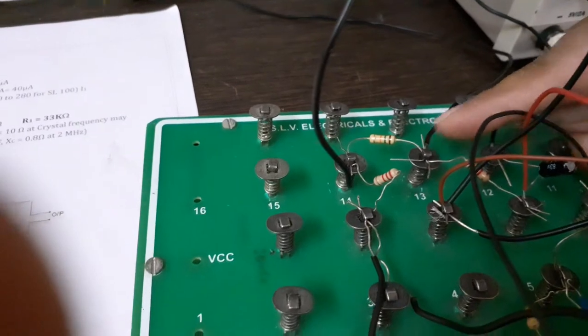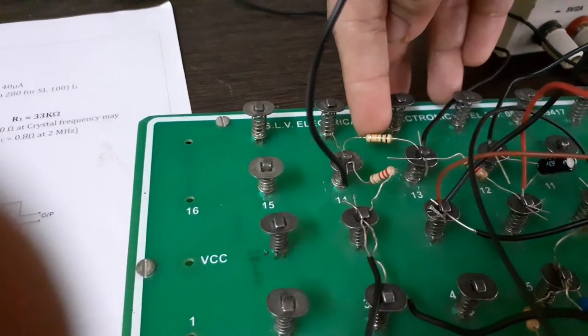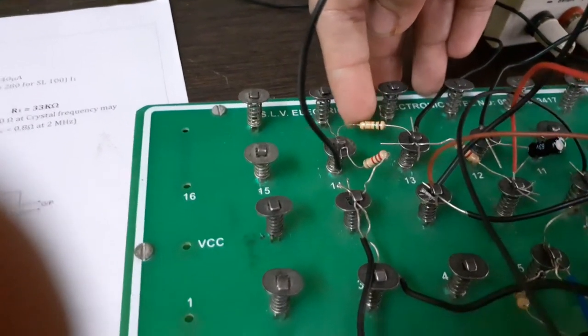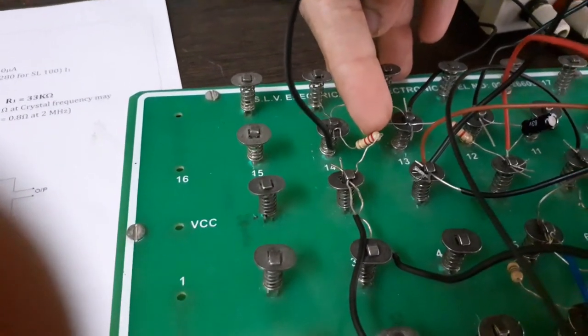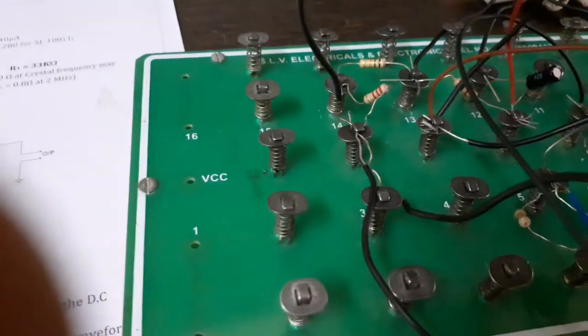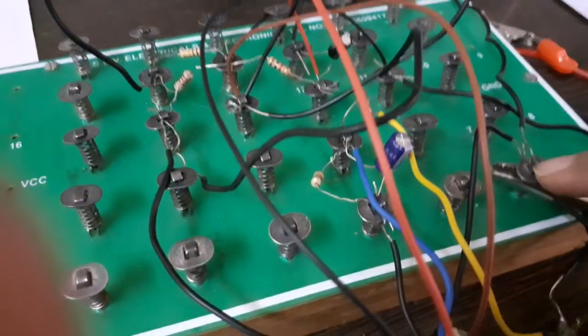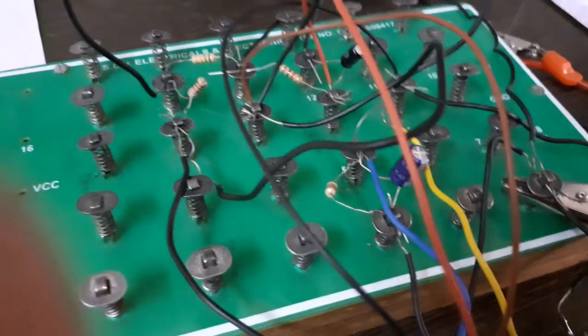And then you should connect R1 of 15k. And with that series you can connect a 2.7k resistor. Then this particular part has to need to be, will make a common ground. It has to be grounded.